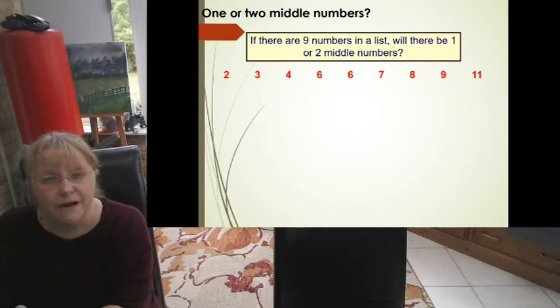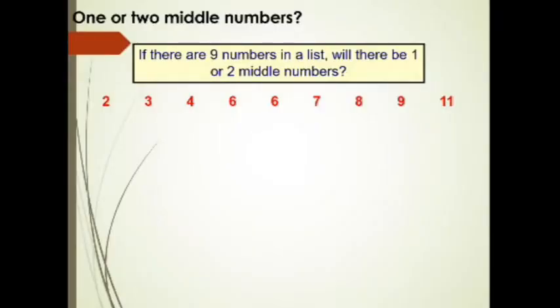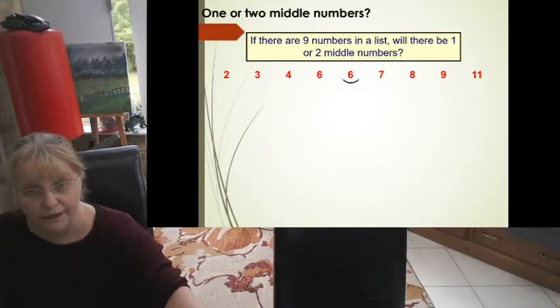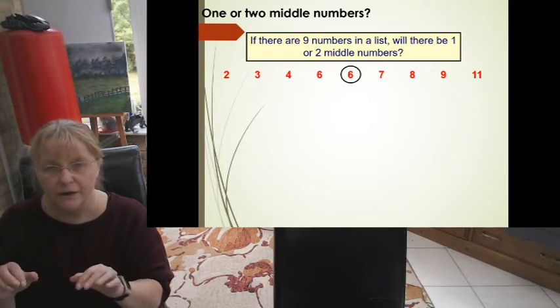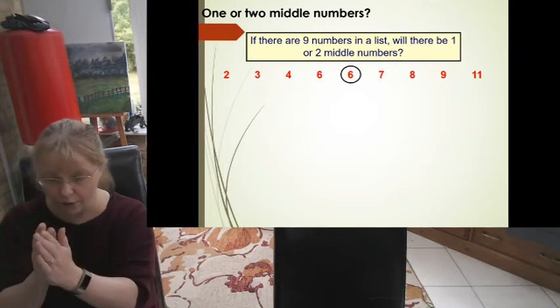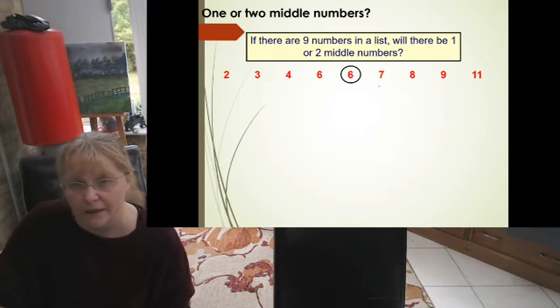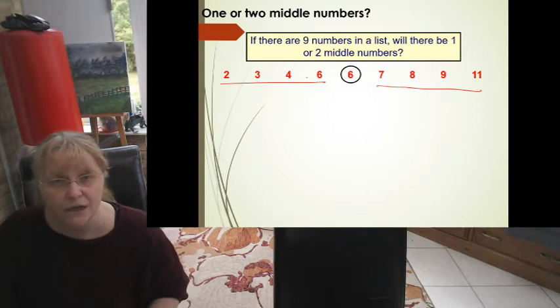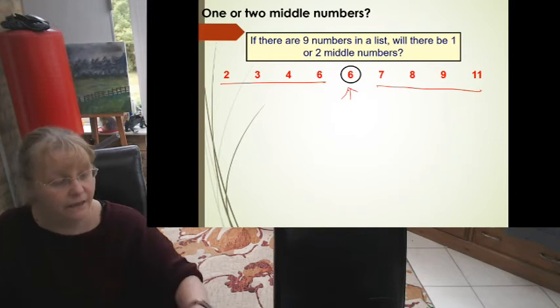So if there are nine numbers in a list, have a think, will there be one or two middle numbers? Hopefully you've decided that there'll be one, because when there's an odd number, that means there's one number in the middle, and it means that there's two even sets of numbers on the side. So to show you what I mean, that one's in the middle, so there's four on this side and four on this side.